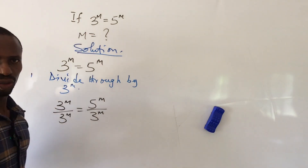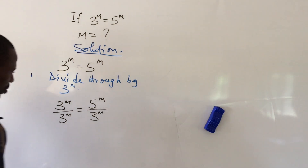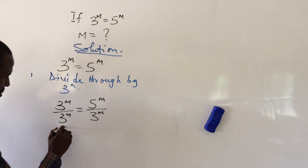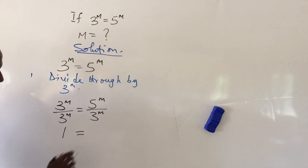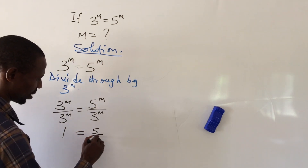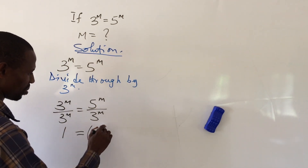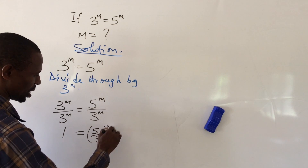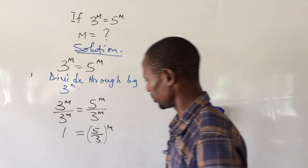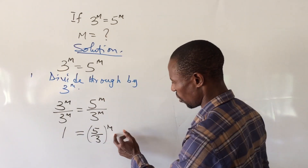This gives us 1 on the left side. Since these powers are the same, we can raise it to a common power. So we now have 1 equal to 5 over 3, all to the power of m.